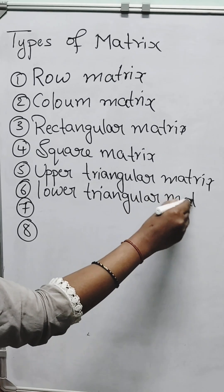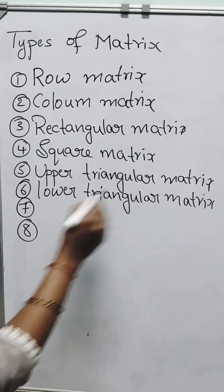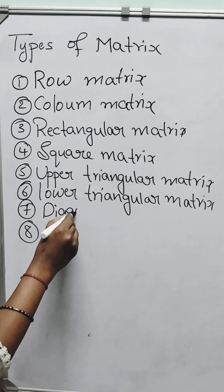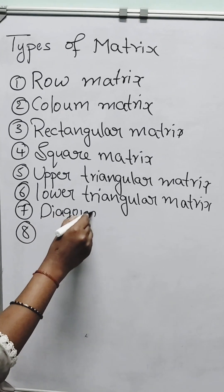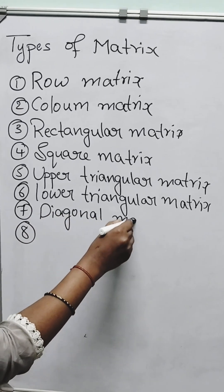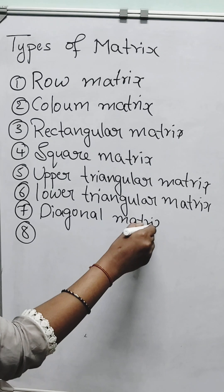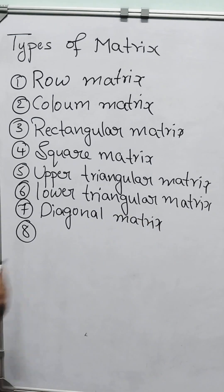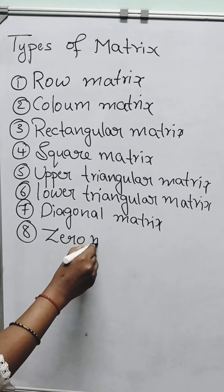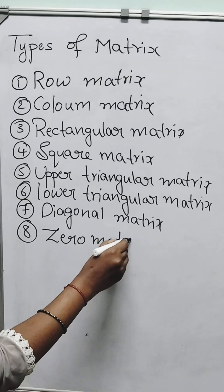Seventh one is a diagonal matrix. Eighth one is a zero matrix.